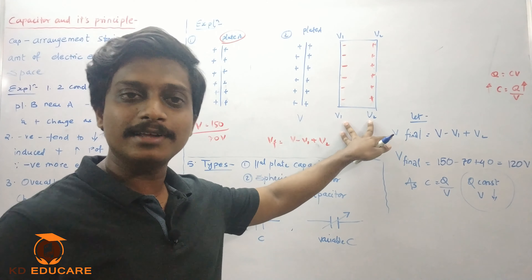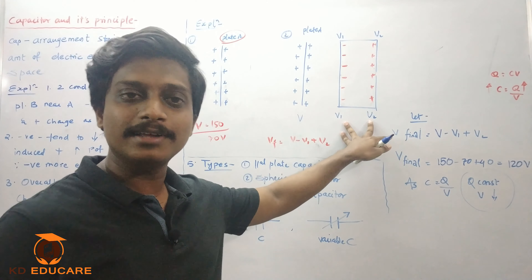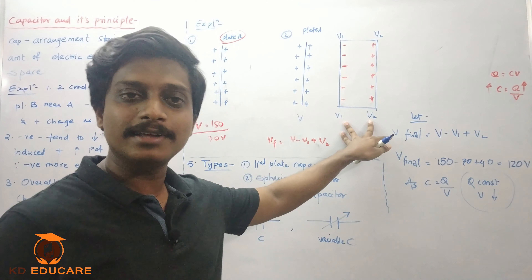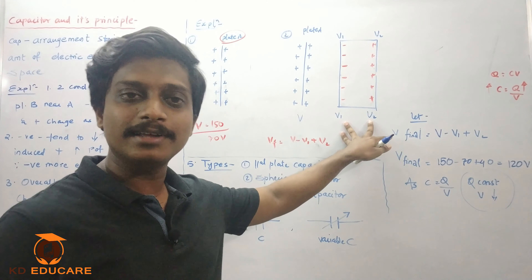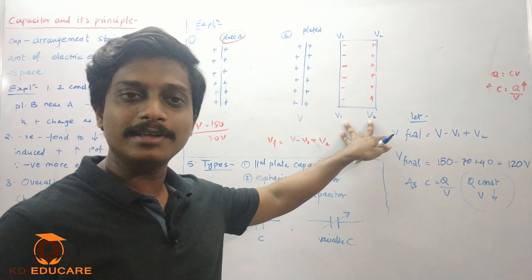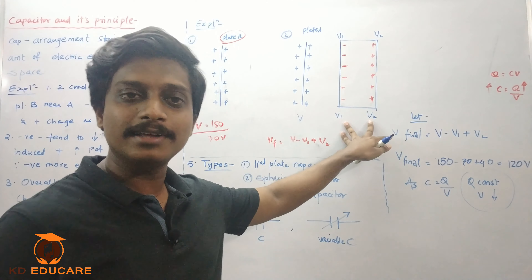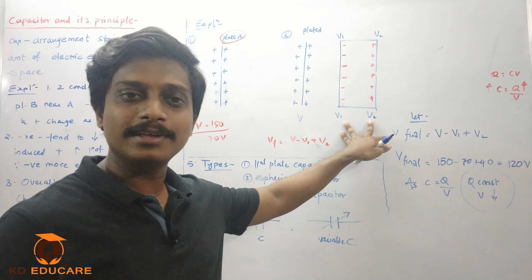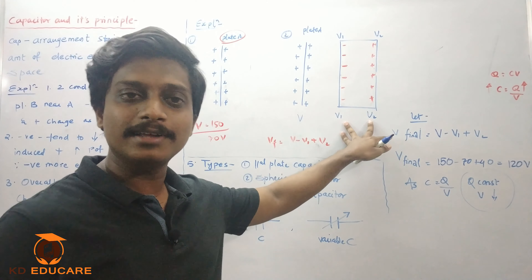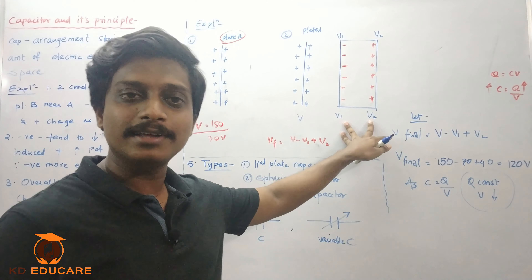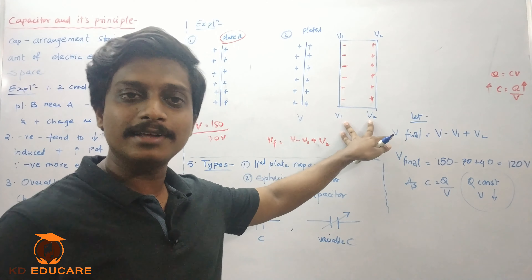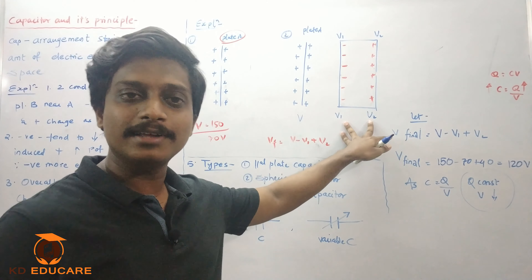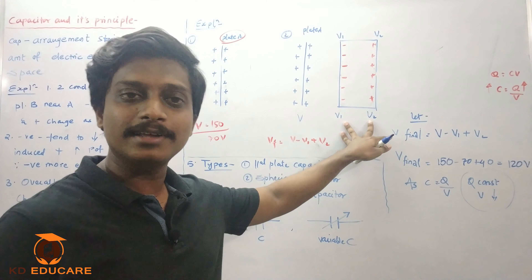Now if you calculate the overall potential of plate A, you will find it is not the original value. The formula is Q = CV, which means C = Q/V. If you want to increase the C value, using this equation you need to decrease the V value. If V value decreases, ultimately C value will increase.